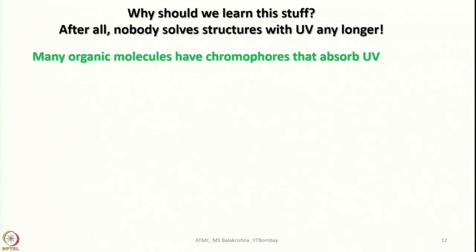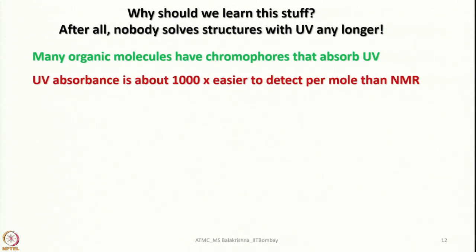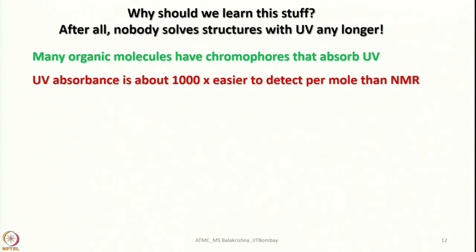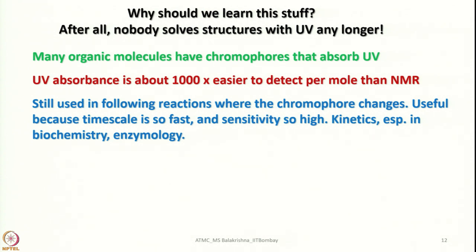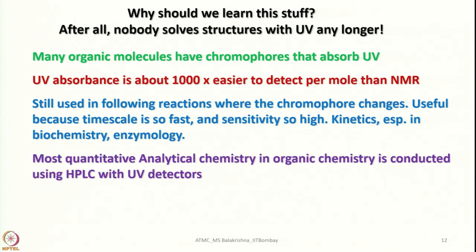We should learn UV-visible spectroscopy because many organic molecules have chromophores that absorb UV light, and UV absorbance is about 1000 times easier to detect per mole than NMR. It is still used in following reactions where the chromophore changes. Its fast time scale and high sensitivity make it especially important in kinetics, biochemistry, and enzymology. Most quantitative analytical chemistry in RNA chemistry is still conducted using HPLC with UV detectors.